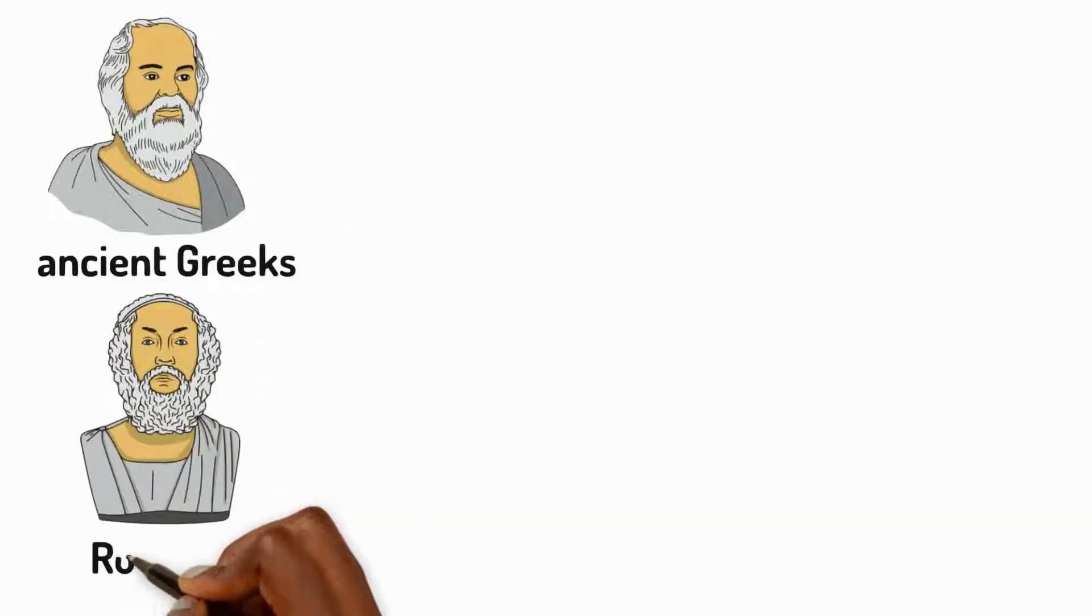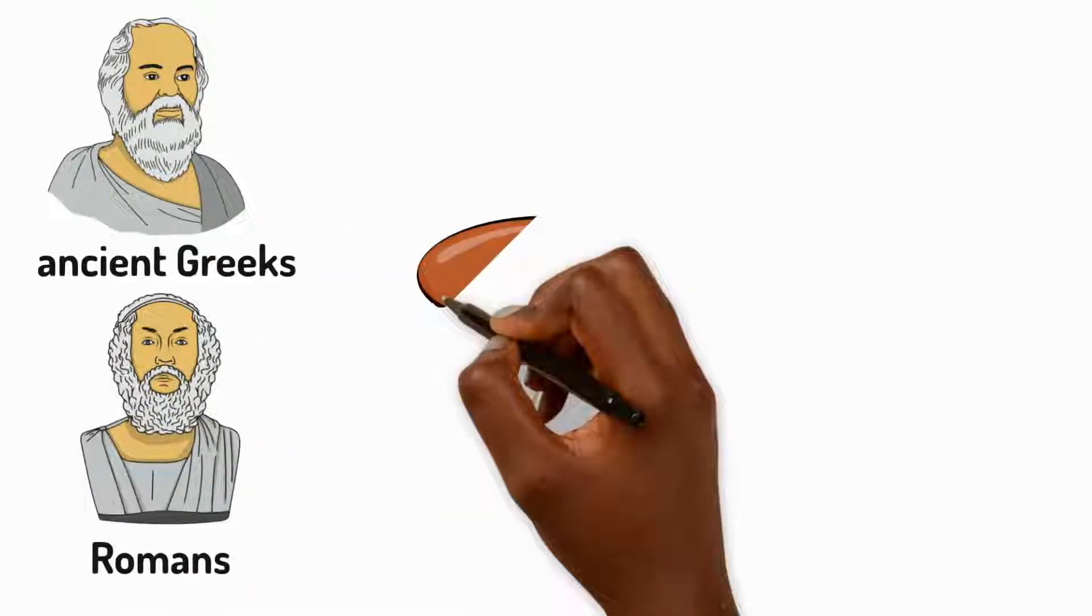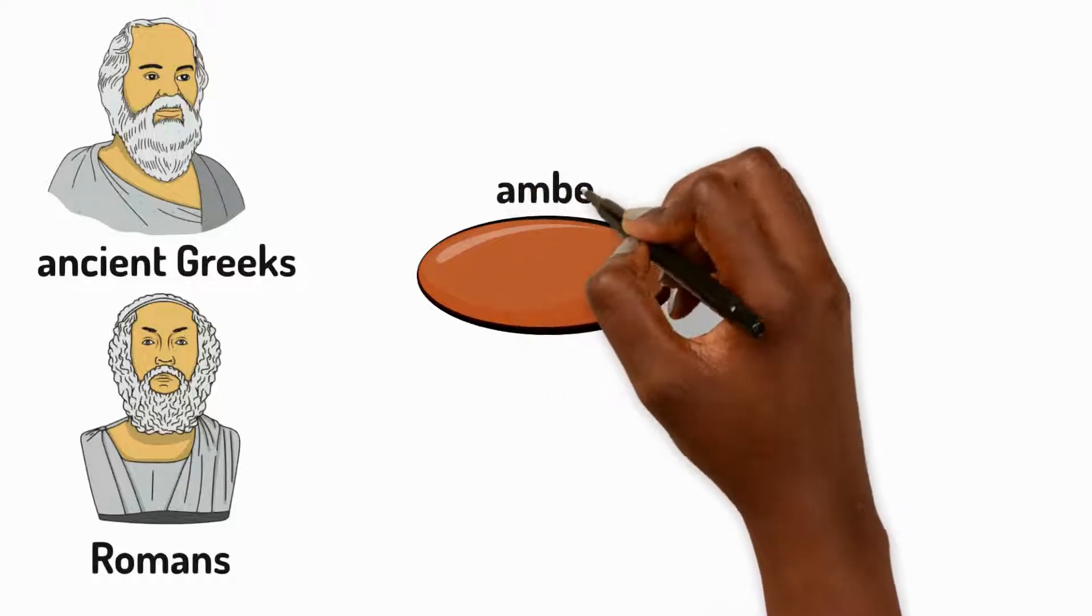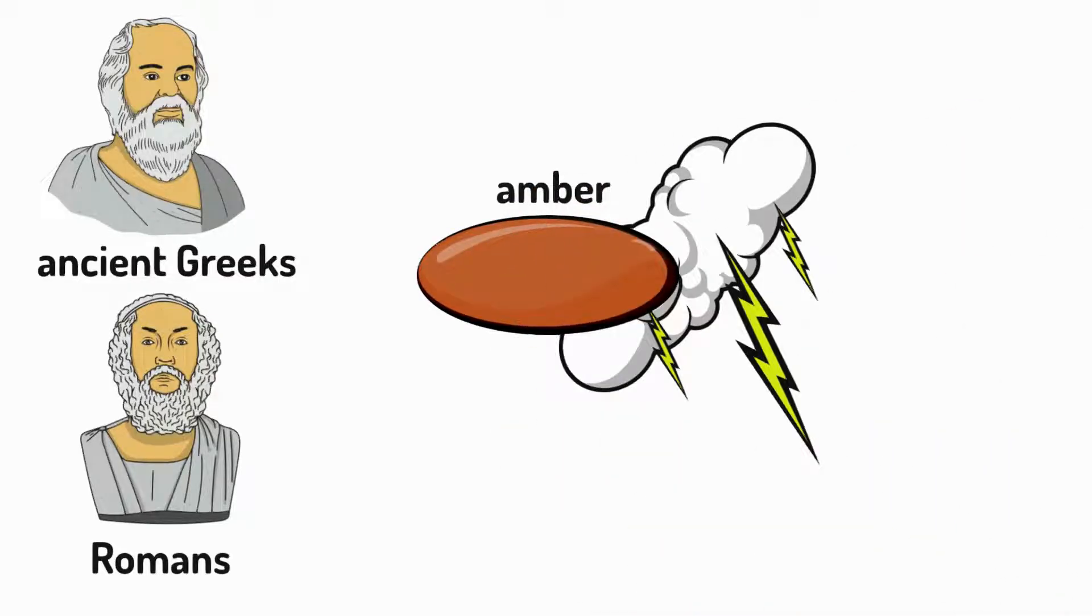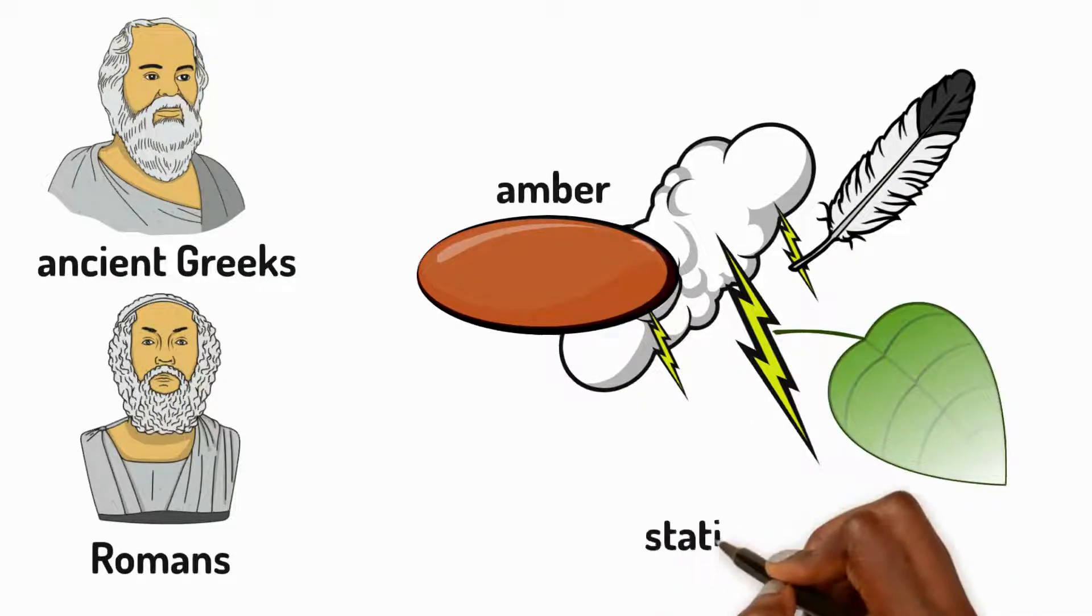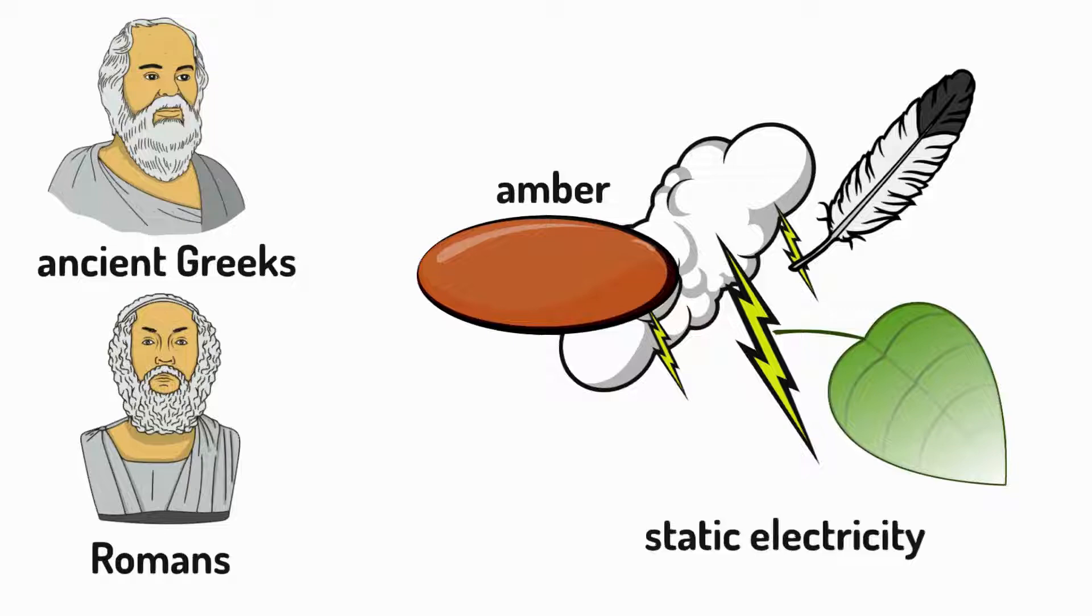Firstly, the ancient Greeks and Romans. When they rubbed a stone called amber against fur or wool, they noticed that the amber became attracted to feathers and leaves. This was a type of static electricity, but they didn't yet know the science behind it.